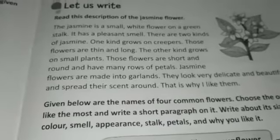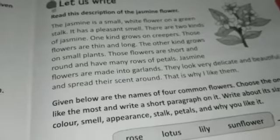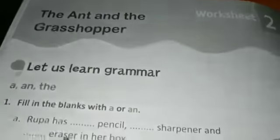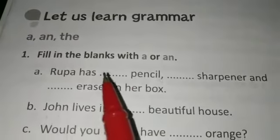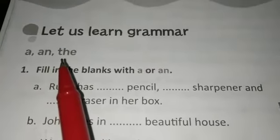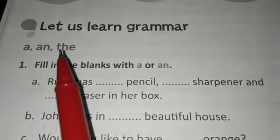Next we move to Worksheet Two, 'The Ant and the Grasshopper.' Here you learn grammar — 'a' and 'the.' These words are articles, which you have already learned in the course book. 'A' is used before consonant sounds and 'an' is used before vowel sounds. 'The' is used when the noun is repeated, or before certain proper nouns. Read these sentences carefully and find out the correct options. You have three exercises here to choose the correct article.